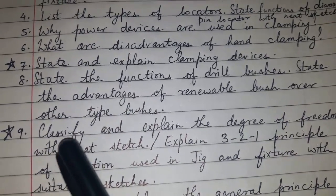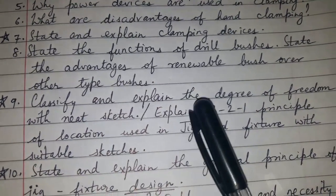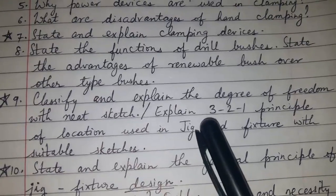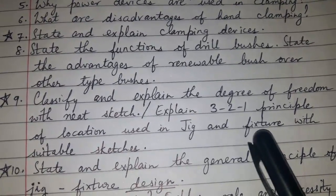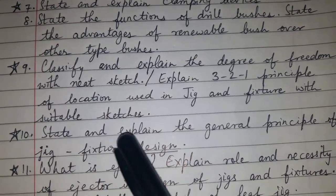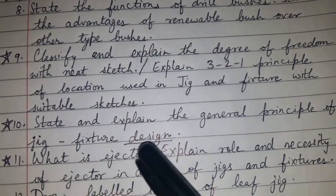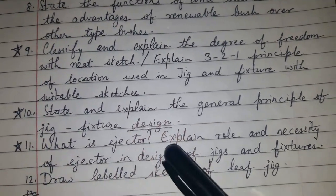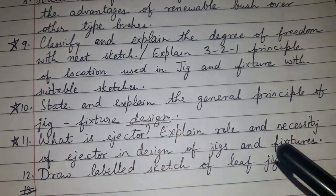Classify and explain the degree of freedom with a neat sketch. Explain the three-two-one principle of location used in jigs and fixtures with suitable sketches. State and explain the general principles of jig and fixture design. What is an ejector? Explain the role and necessity of an ejector in the design of jigs and fixtures.